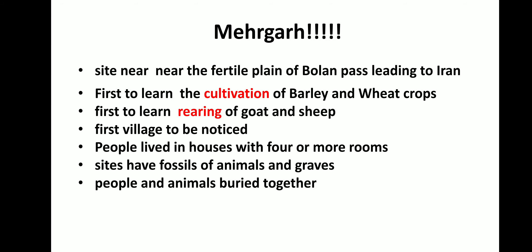Mehrgarh is a site near the fertile plain of Bolan Pass leading to Iran. It was the first site where cultivation of barley and wheat crops were found, and people here were the first to learn the rearing of goat and sheep. It was the first village noticed by archaeologists. People here lived in houses with four or more rooms. The sites had fossils of animals and graves — people and animals were buried together, showing they had domesticated animals.